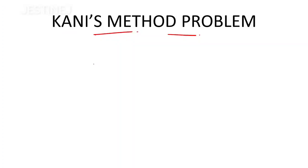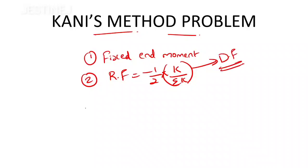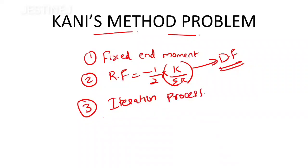While analyzing a continuous beam using Kani's method, we follow certain steps. The first step is to calculate the fixed end moment values. The second step is to calculate the rotation factor, which equals minus 1 by 2 multiplied by k by sigma k. We already know that k by sigma k is the distribution factor. The third step is the iteration process.